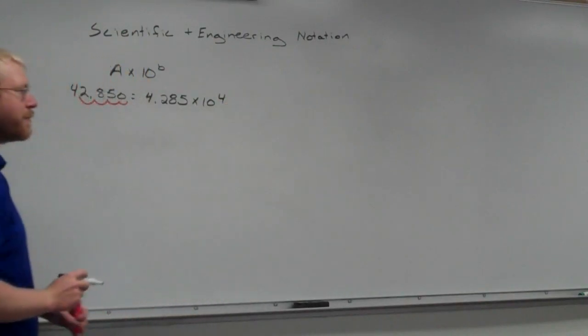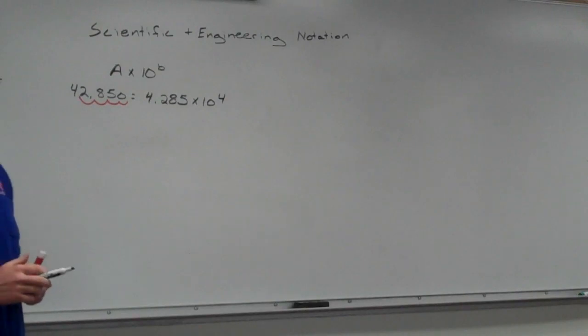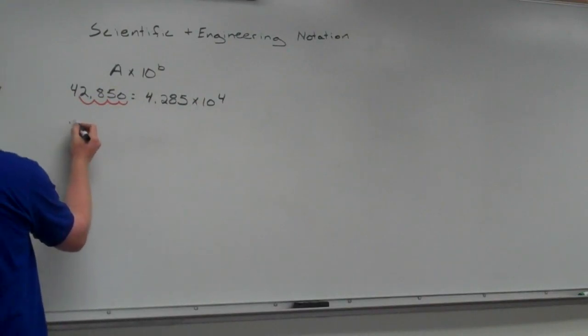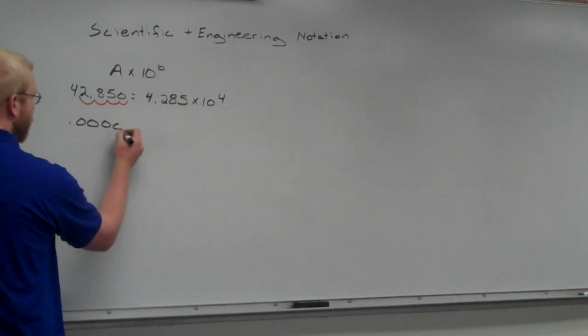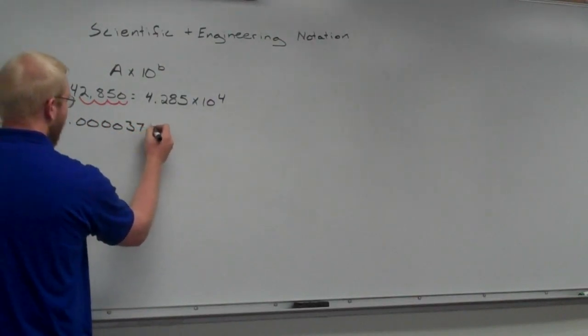So, that's going to be 10 to the power of 4. We're not going to start worrying about significant digits and all that other stuff right now. We're just dealing with scientific and engineering notation. So, if I had a decimal, I'm going to go the other way. Let's say that I had 0.0000378.